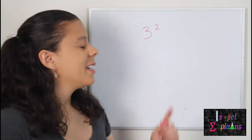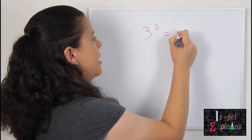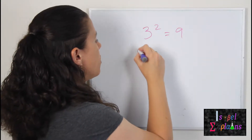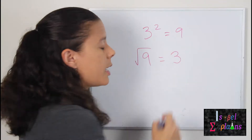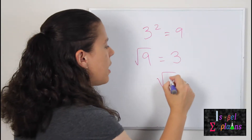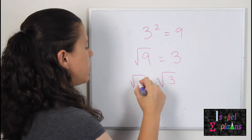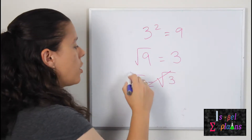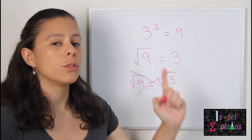Now, an example. We have 3 squared, which is 9. That means that the square root of 9 is 3. Not the square root of 3. I see a lot of my students make this mistake of making the square root of 9 equal to the square root of 3. That is not correct. The square root of 9 is equal to 3.